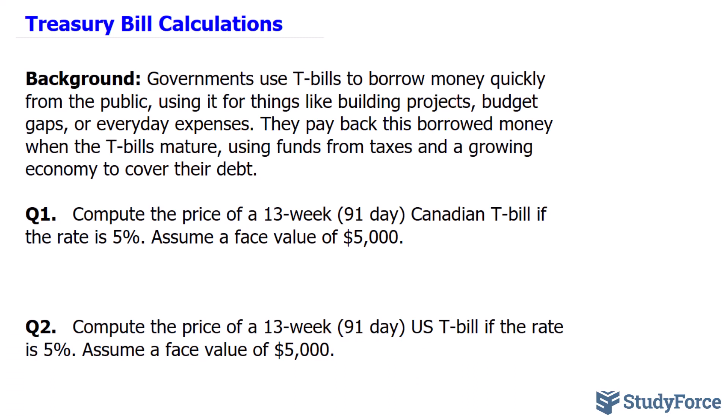To find the amount after simple interest has been applied, we use the formula A = P + PRT, where A is the final amount, which includes the principal plus the interest. P represents the principal, R represents the rate, and T represents the time.